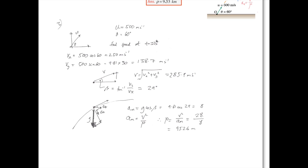To find its speed after 30 seconds, apply the Suvat equations — it's under constant acceleration. The speed after 30 seconds is 250 m/s in the x and 139 m/s in the y. The magnitude is the norm of those: √(vx² + vy²) = 285.9 meters per second, and the angle between them is the inverse tangent of one over the other: 29 degrees.